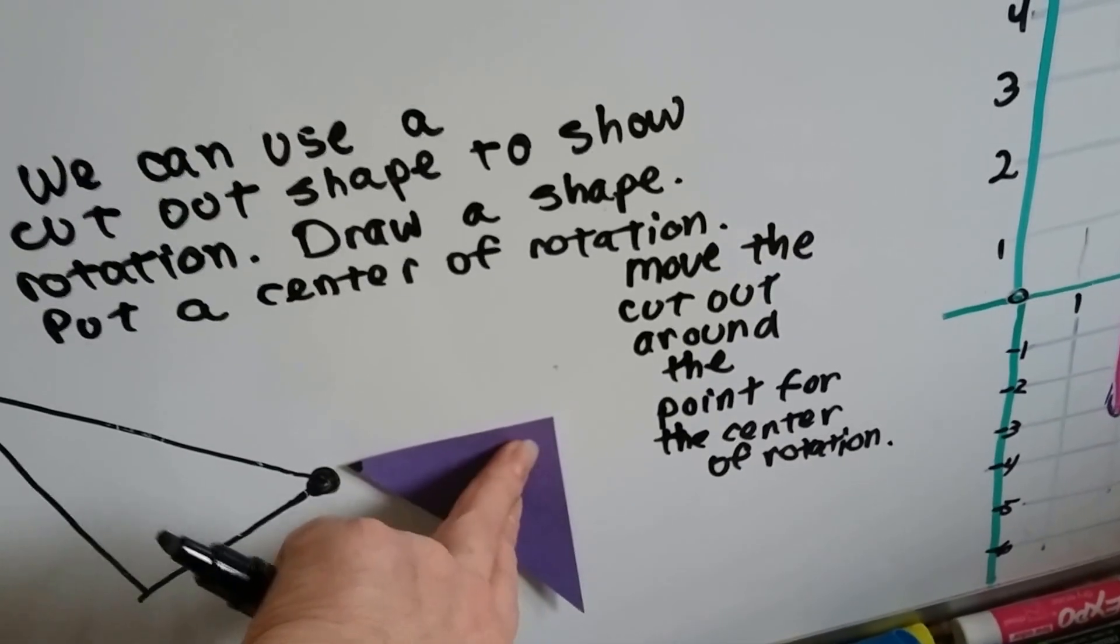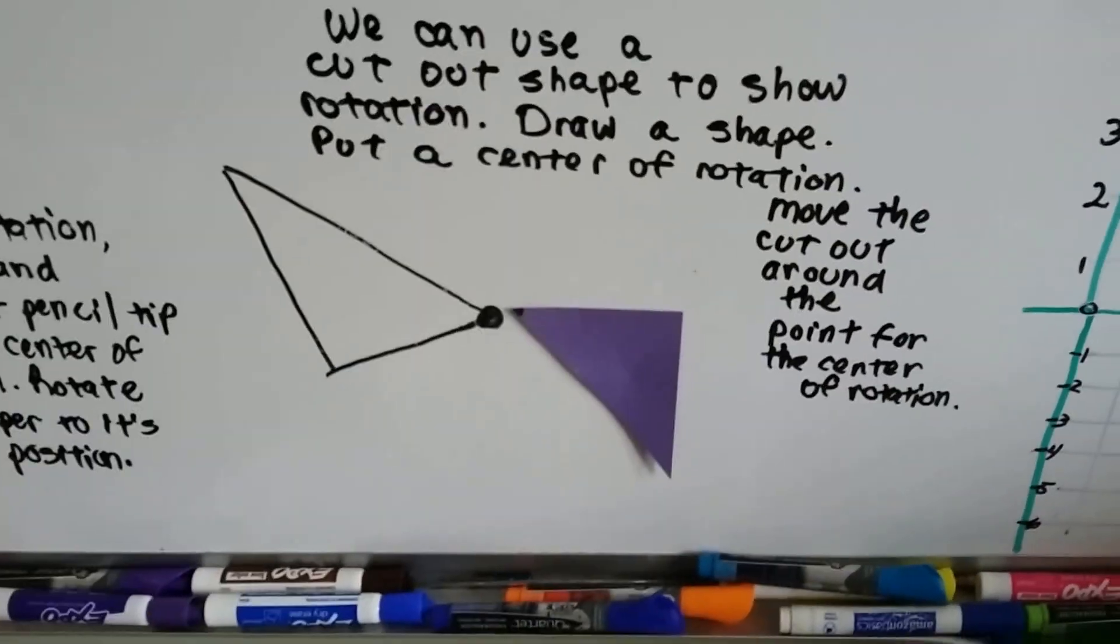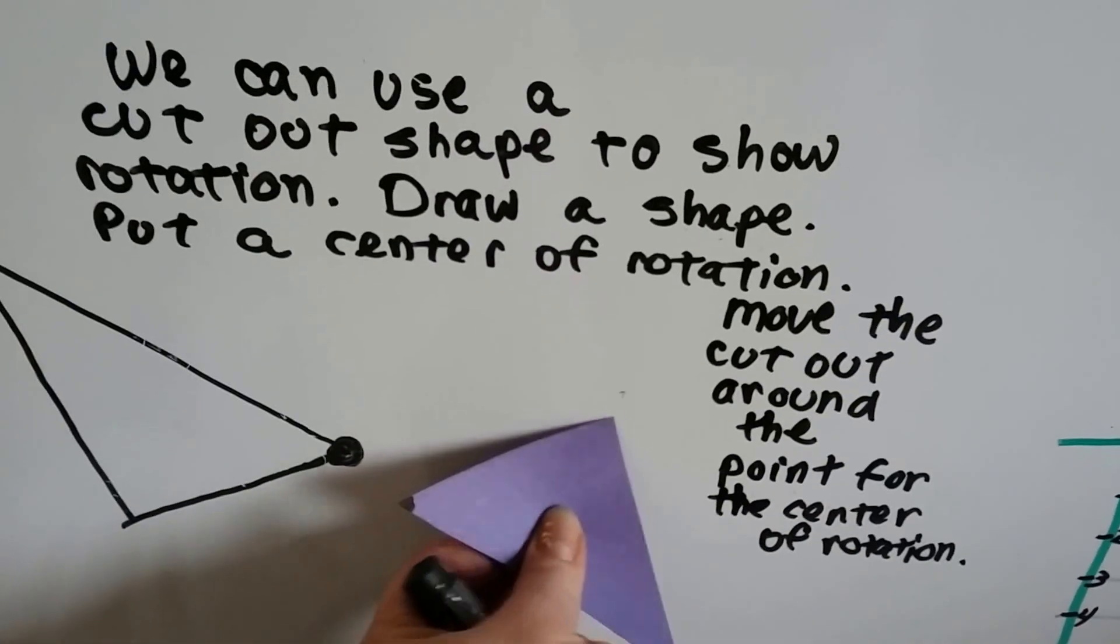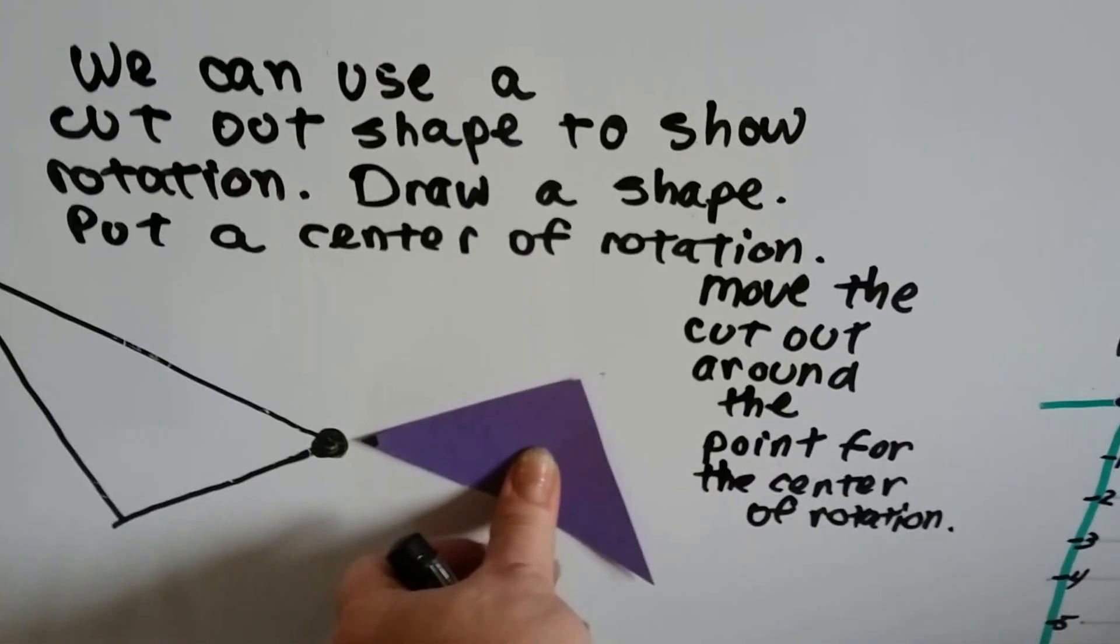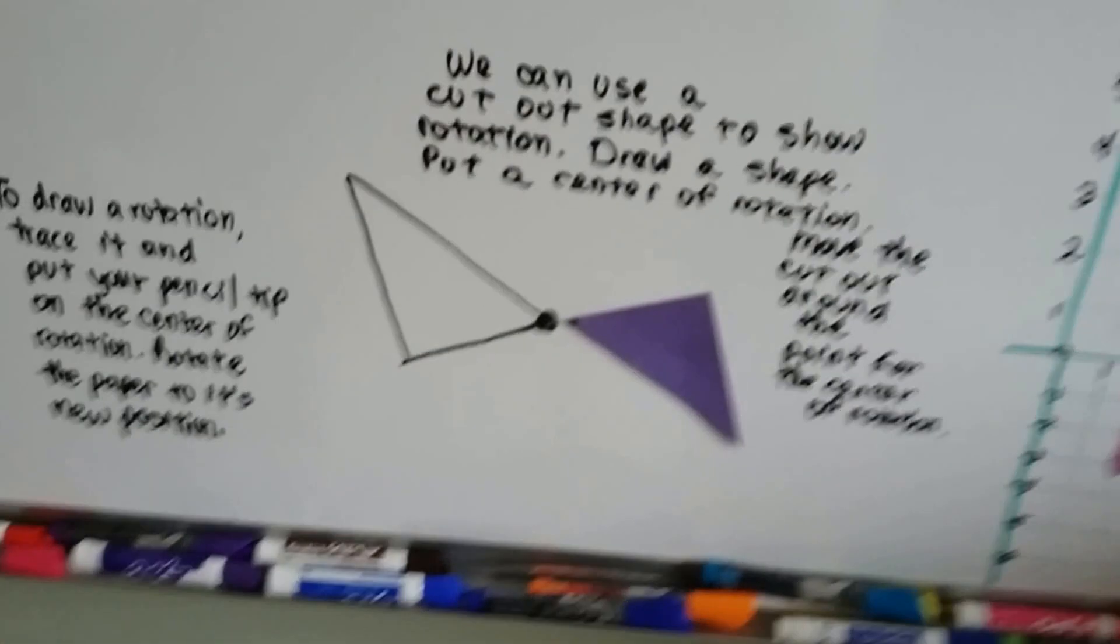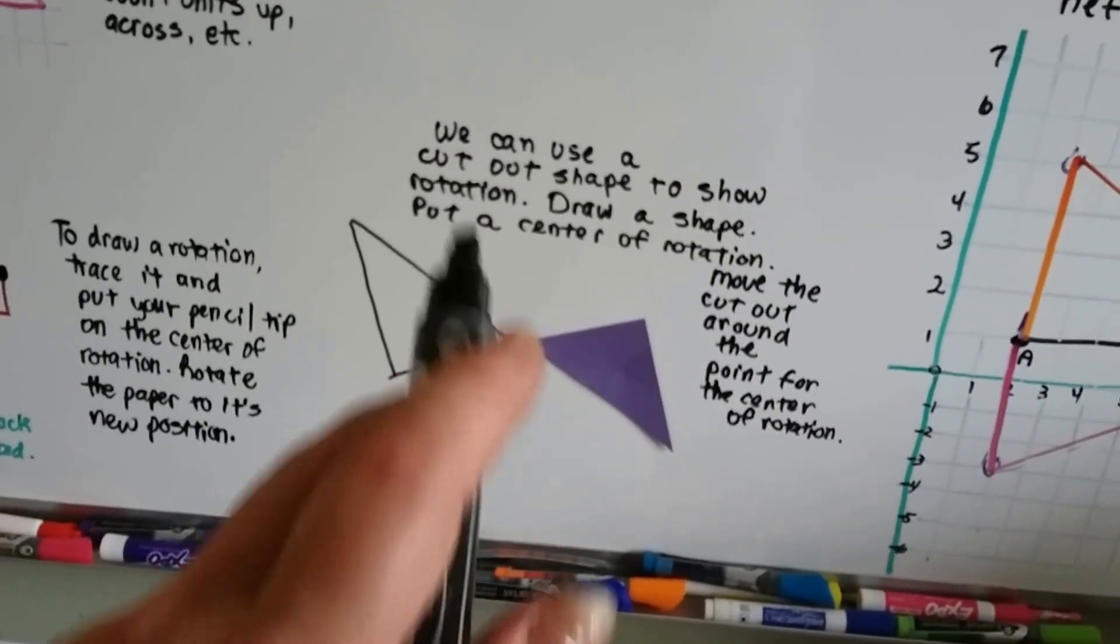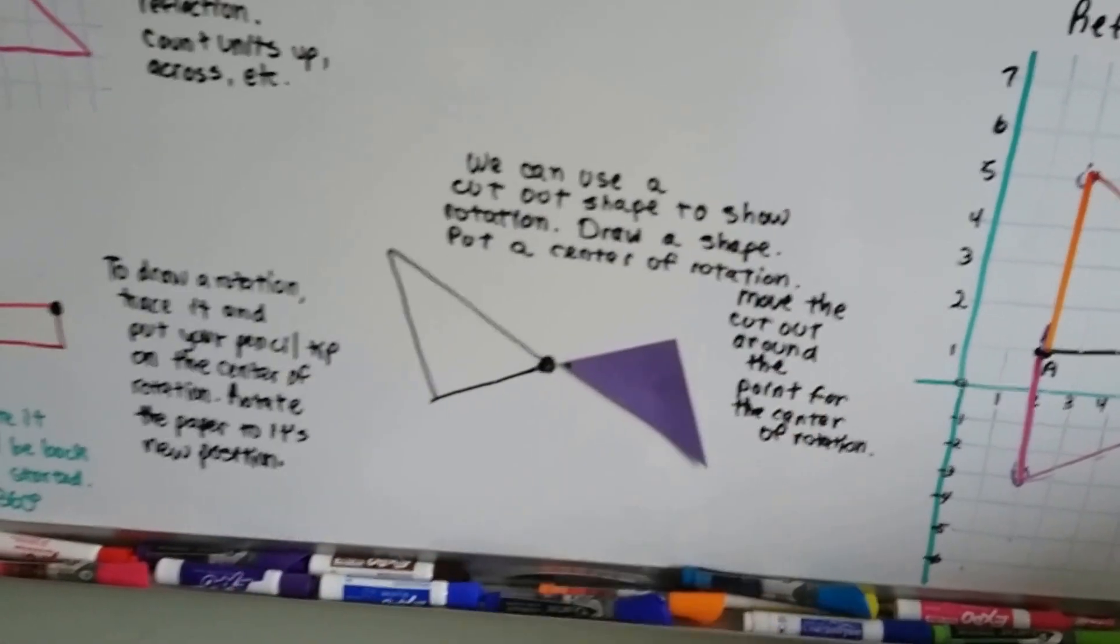This is what it would look like if it rotated around, let's make it rotate around 180 degrees, like halfway. That's what it would look like if it rotated around halfway, 180 degrees.